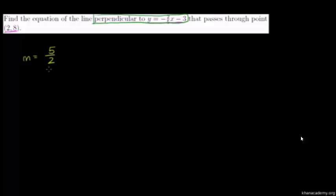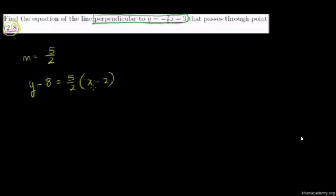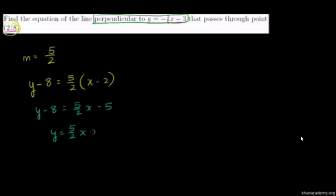We can use point-slope form. The line passes through (2, 8): y minus 8 equals 5 halves times (x minus 2). To convert to slope-intercept form, distribute the 5 halves: y minus 8 equals 5 halves x minus 5. Add 8 to both sides: y equals 5 halves x plus 3. And we are done.